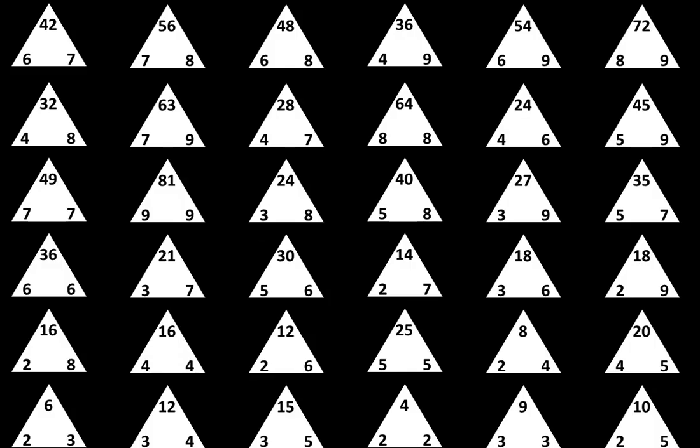In this video, you will make a new set of triangles with the facts in a new order. When you are finished, your paper will look like this, and then you will have a chance to take a closer look at the relationships in the triangles. For this activity, you'll need a pencil and a blank piece of paper. Pause the video until you have those supplies ready.